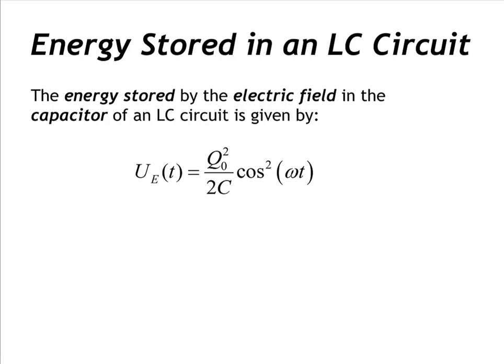Because the charge on the capacitor plates varies periodically as a function of time, so must the electric potential energy stored by that capacitor. The energy stored by the electric field in the capacitor of an LC circuit is equal to the square of the amplitude of charge divided by two times the capacitance, times the square of the cosine of the product of angular frequency and time.